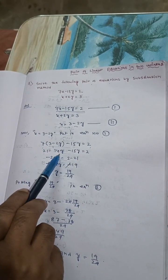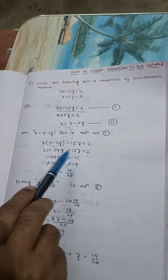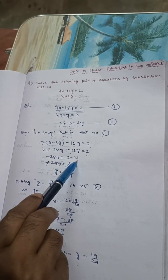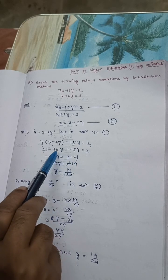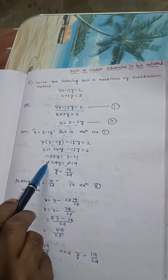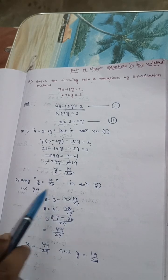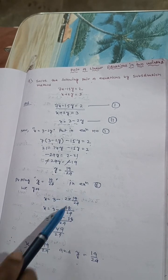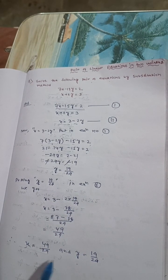Now, 7 times 3 is 21, so 21 minus 14y minus 15y equals 2. 21 goes to the right side, the sign changes. This is minus 29y equals minus 19. Minus and minus cancel, giving y. Then putting y into equation 2, we get the value of x.